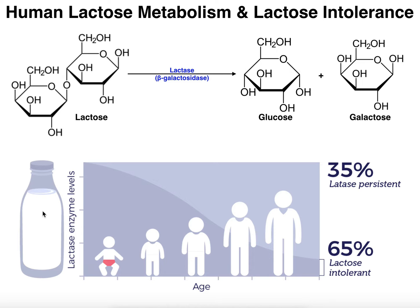The lactose, being a disaccharide of glucose and galactose, gives infants some important precursors. Glucose obviously can be used by the cell for energy — it's the primary monosaccharide — but glucose itself can also serve as a precursor to a variety of different things like N-acetylglucosamine, glucuronic acid, and other compounds used in biosynthesis.